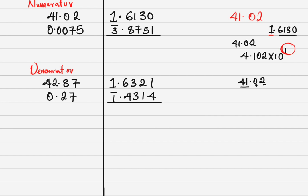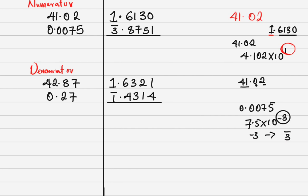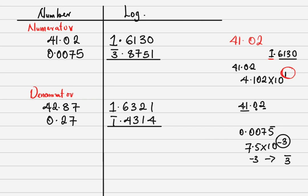For the number less than 1, which is 0.0075, convert to standard form: 7.5 times 10 to the power minus 3. That minus 3 becomes 'bar 3' in the logarithm environment. In logarithms, you don't write negative 3; instead you use bar notation — so bar 3 represents the negative characteristic.